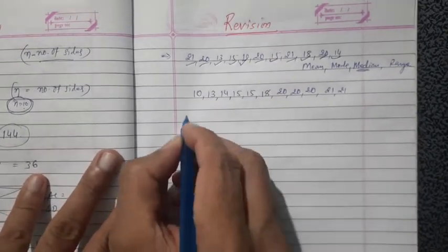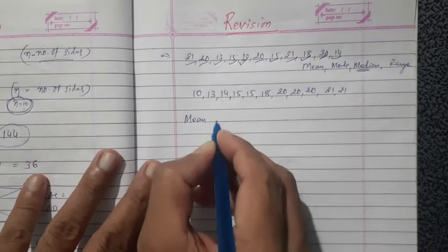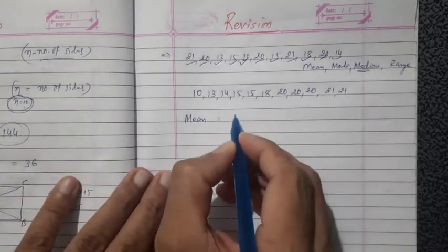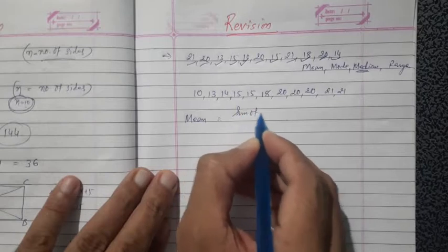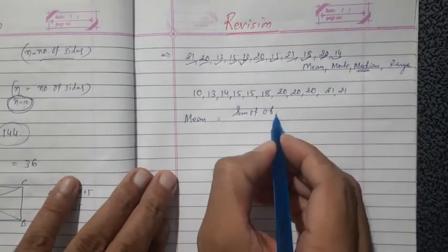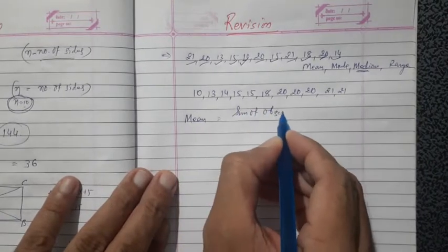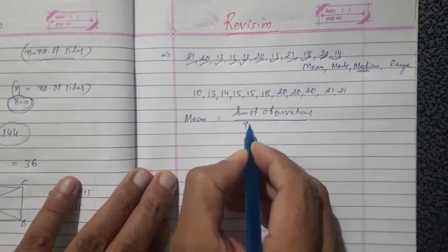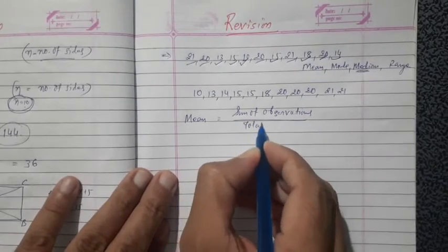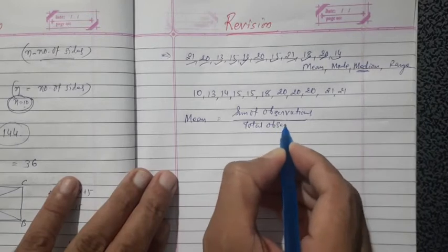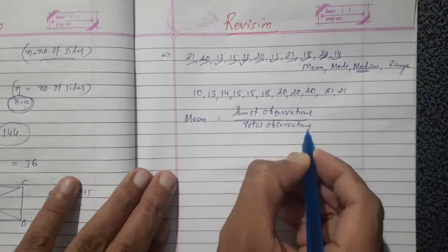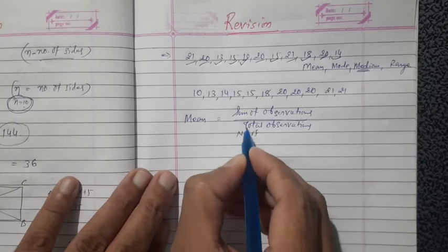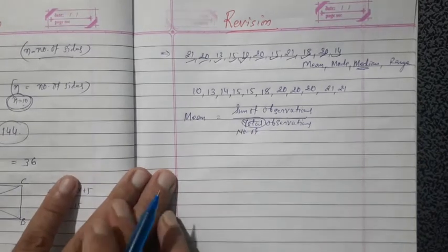Now find the mean. The formula for mean is: mean equals sum of observations divided by total number of observations.